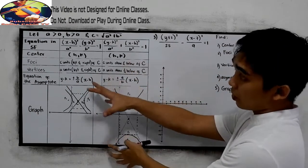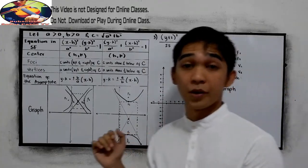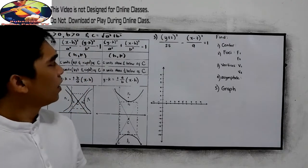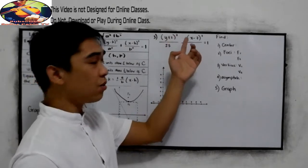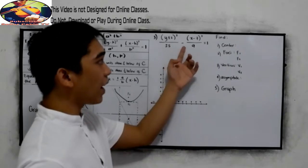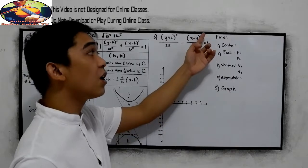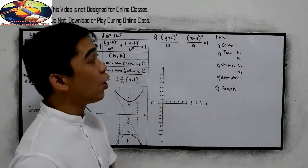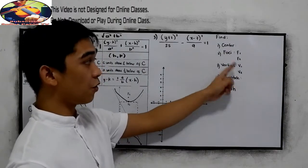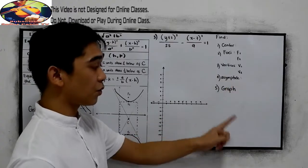Now let us use this table to solve this problem. Example number 3. So our given is quantity y plus 2 raised to 2 all over 25, minus quantity x minus 7 raised to 2 all over 9 is equal to 1. We're going to find the center, the foci, the vertices, the asymptote, and the graph.